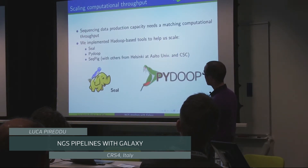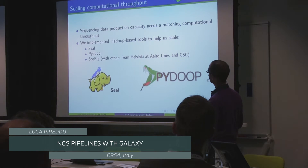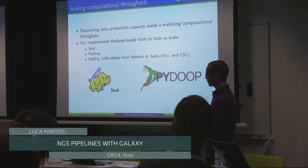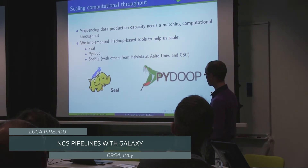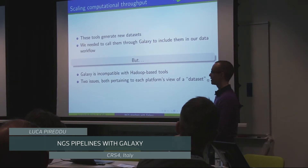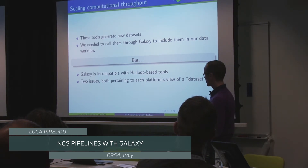Another problem was scaling computational throughput in our pipeline. For this, we implemented some Hadoop-based tools, especially for our bottleneck steps - those would be Seal, Pydup, and Secpig, among other platforms that support APIs we use on top of Hadoop. These tools generate new data sets, and in our setup we want to call them through Galaxy so we can have a history of what we did. But Galaxy isn't compatible with Hadoop-based tools - there are two issues that prevent them from playing nice with each other.